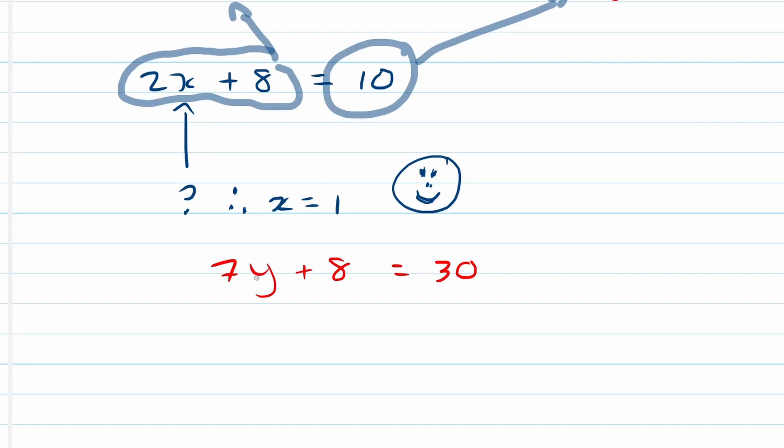So over here we've got a 7y that needs to be equal to 22. So this one is purposefully, I've purposely chosen a little bit more of a difficult one. So 7y needs to be equal to 22. We know 21 divided by 7 is equal to 3. So we can say that y has to be 22 divided by 7.